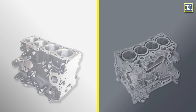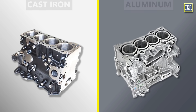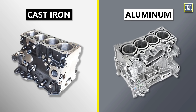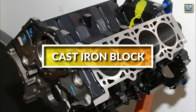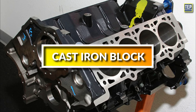Engine blocks are normally cast from either cast iron or an aluminum alloy. In this video, we are taking a look at the difference between cast iron engine blocks and aluminum engine blocks. Let's start with the cast iron engine block.